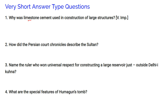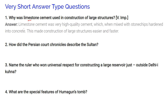Limestone cement was used in the construction of large structures. It was very high quality cement which, when mixed with stone chips, hardened into concrete. This made the construction of large structures easier and faster.